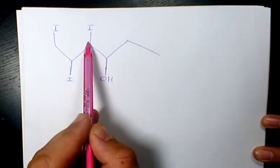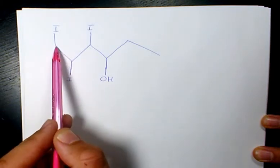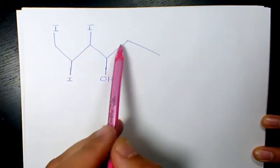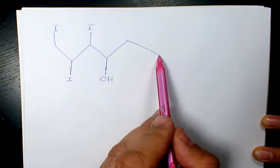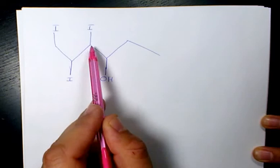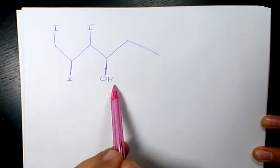We have one, two, three, four, five, six carbon atoms, so we are dealing with hexane. We have hydroxyl group, so we are dealing with an alcohol. We need to start from this side numbering them because hydroxyl group gets the smallest number when we start from this side, not that side.